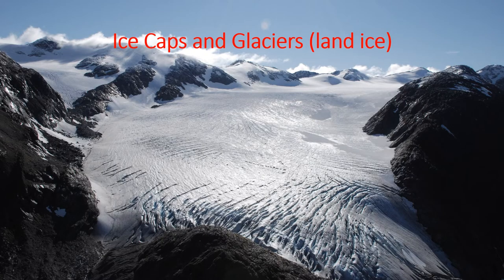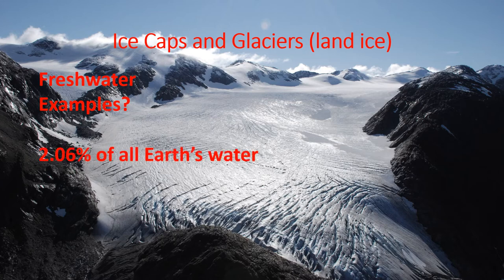Next, let's move on to ice caps and glaciers, referring to ice that's on the land. Any type of ice is fresh water — when water freezes the salt doesn't stay inside of it, so when the ice melts it's fresh water. Some examples of land ice and ice caps would be Antarctica. There's land underneath Antarctica and it's covered in ice. And then also glaciers — alpine glaciers, like the ones we have in Glacier National Park.